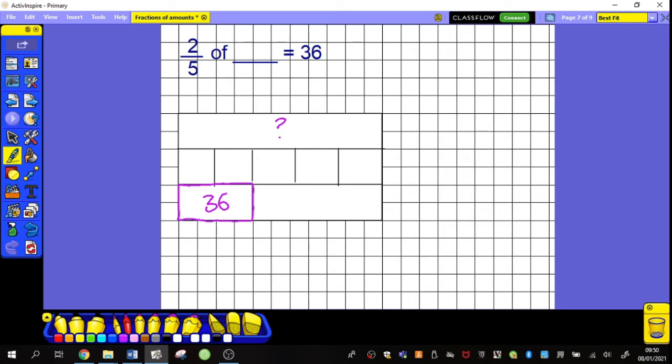In order to find my whole, first thing I need to do is to find one of those parts. If I know two are thirty-six and I want to find one, I'm going to then divide it by two. Thirty-six divided by two is eighteen. Each one of these must be eighteen.